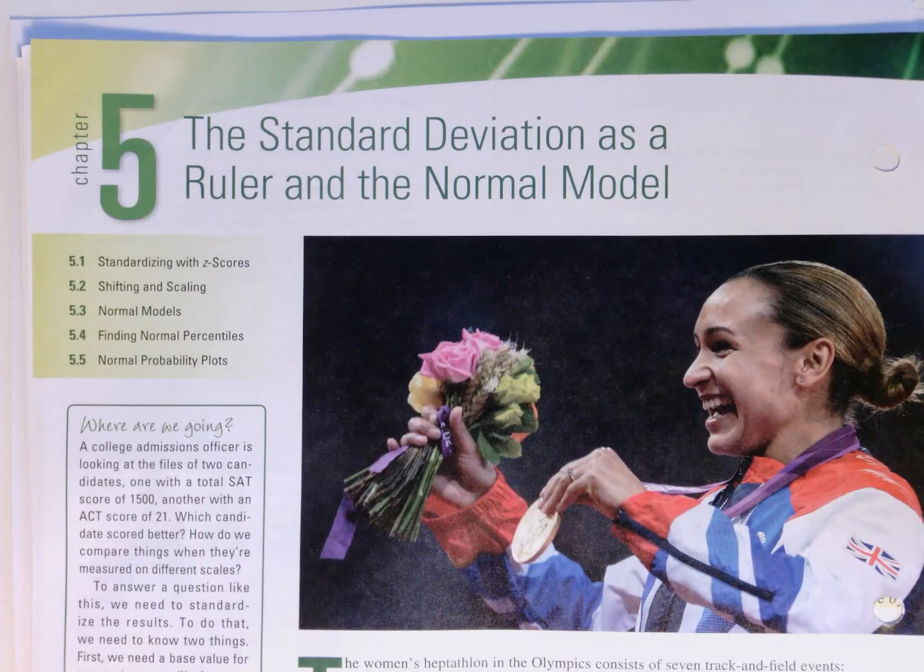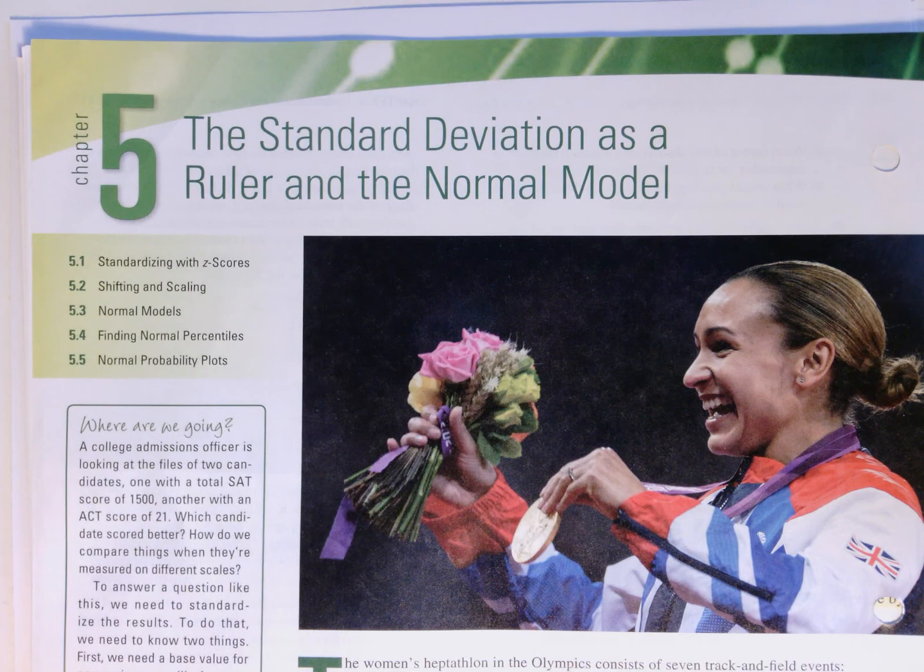Chapter 5 of SDM 4 introduces the idea that the standard deviation, the average distance from the mean, can be used as a ruler, and how this is particularly helpful for the normal model.